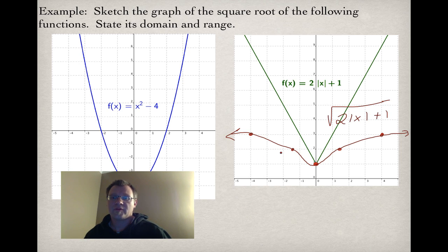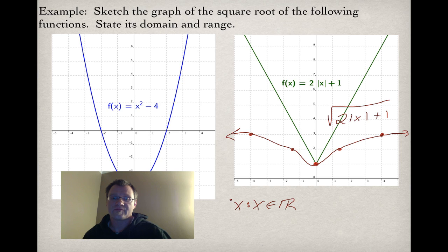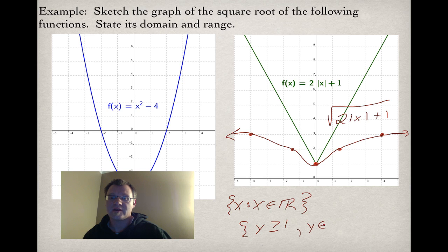The domain of this function: it's continuous with no breaks in the graph, so the domain is x ∈ ℝ. The range starts at a height of 1 and goes upward, so the range is {y : y ≥ 1, y ∈ ℝ}.